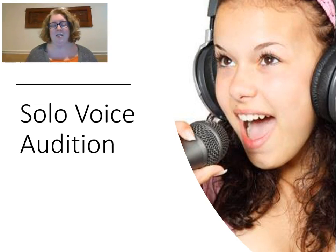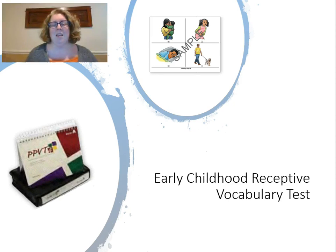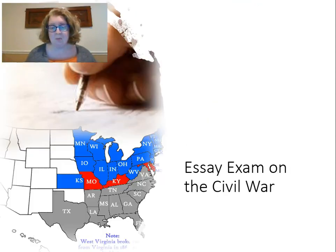For the PPVT, an early childhood receptive vocabulary test, it tells us what words a child understands. That might be good for placement into an ELL program, and it might also tell us how well our early childhood program is doing at teaching language — and we know language is a big predictor of reading. What about an essay exam on the Civil War? It tells us something about what they know about the Civil War, but also about their reasoning abilities and their ability to write about history.